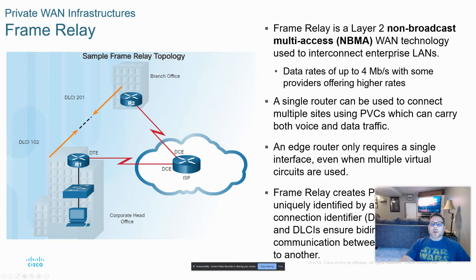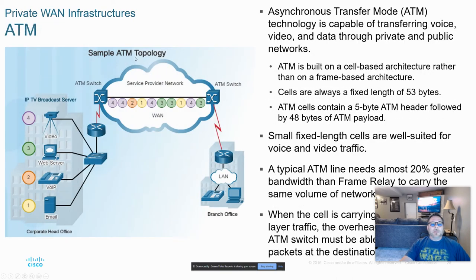Frame Relay is an NBMA network type — not commonly used much in the U.S. but could still be used abroad. It used the idea of virtual circuits through the provider's cloud, and was one of the first technologies to do so. ATM — Asynchronous Transfer Mode — was very prominent in the 90s and is still used to some extent. A characteristic of ATM is that it doesn't use frames like Ethernet; it uses smaller cells to transfer data, and these used fiber underlay networks with various OC ratings for network speeds.